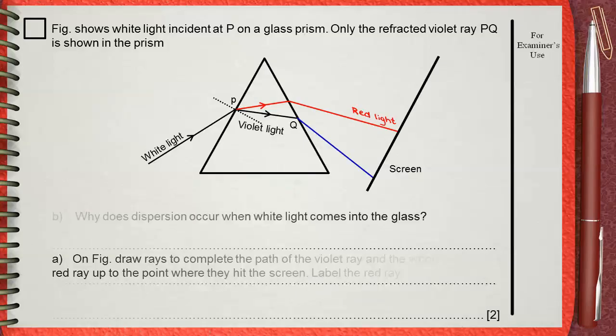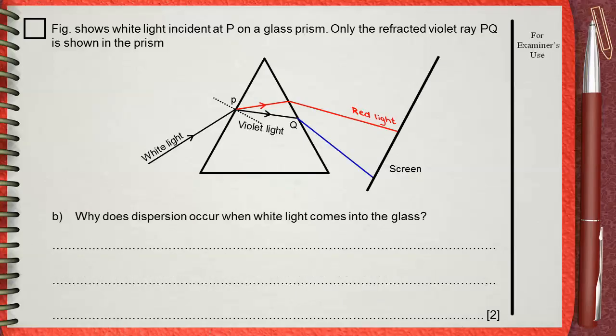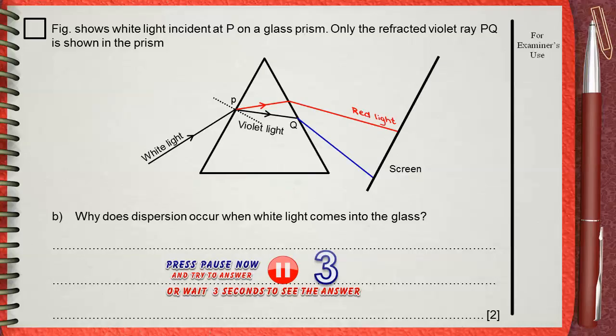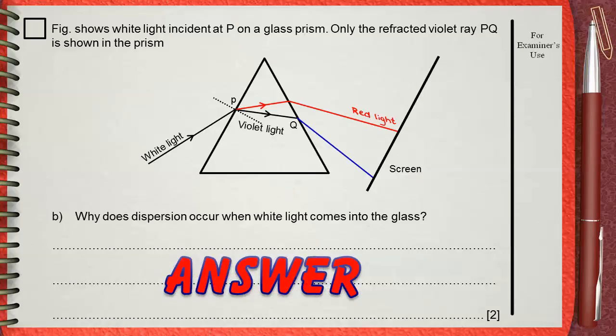Question B: Why does dispersion occur when white light comes into the glass? Let's understand something here.